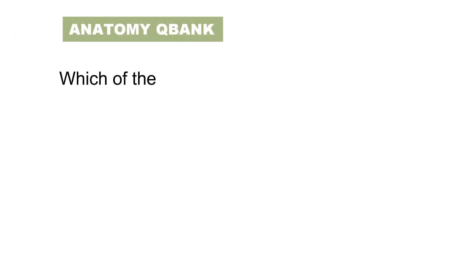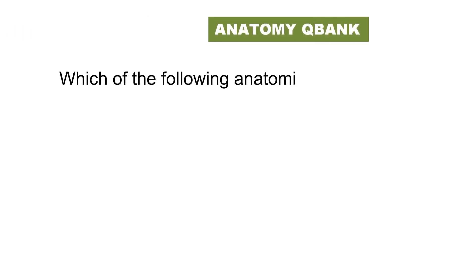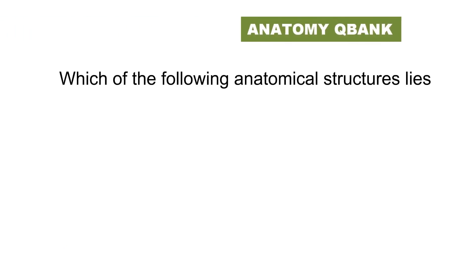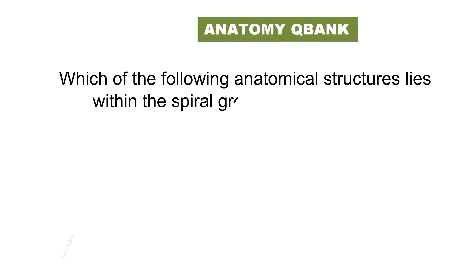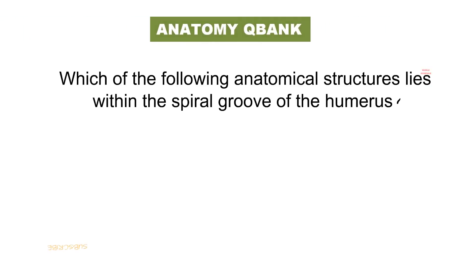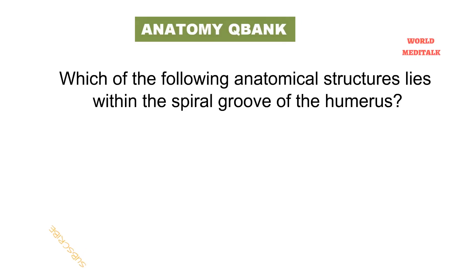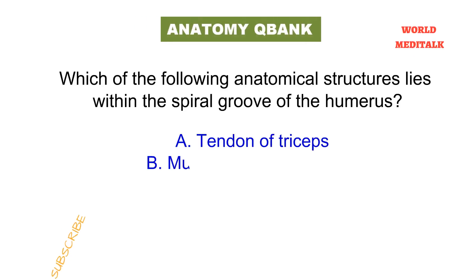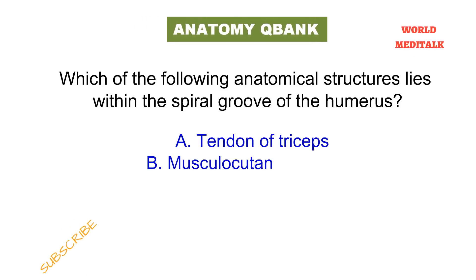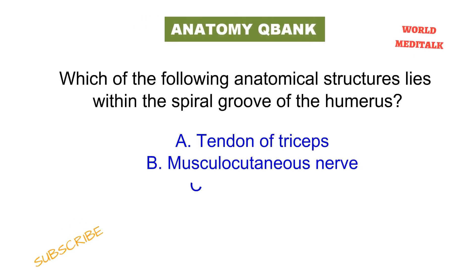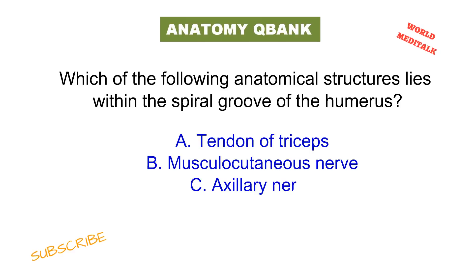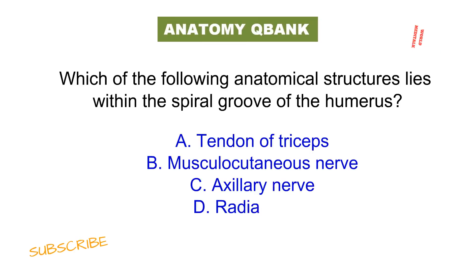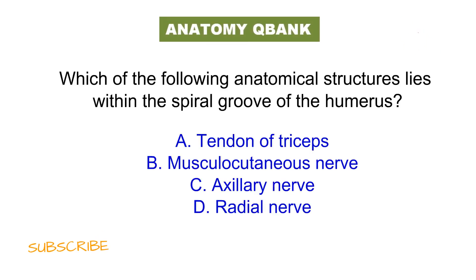Which of the following structures can be damaged by the injury of the spiral groove of humerus? Tendon of triceps, musculocutaneous nerve, axillary nerve, radial nerve. Pause the video and try to think about the answer.